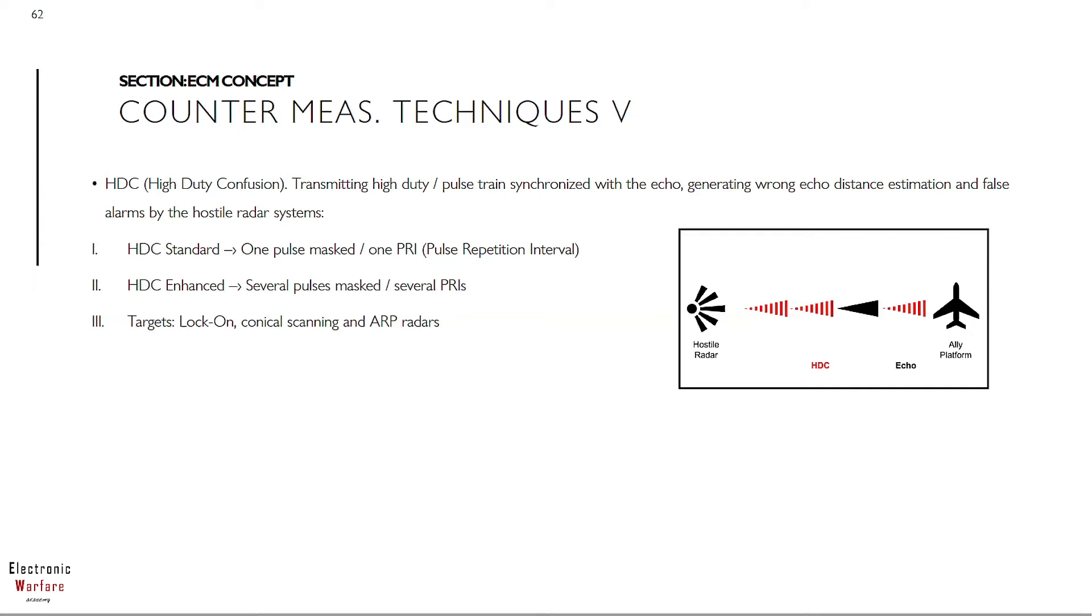Therefore, the hostile radar will receive several pulses with identical parameters, degrading the identification to the real one. HDC could be implemented as standard for one pulse masked, or for several pulse mask. Target for this technique, same as HDT: lock on, conical scan radars, and ARP radars.